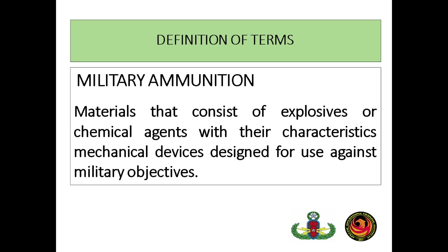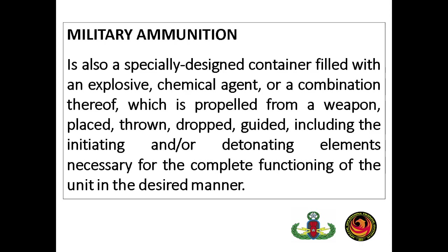Definition of terms — military ammunition: these are materials that consist of explosives or chemical agents with their characteristic mechanical devices designed for use against military objectives — used for military purposes or to attain military objectives directed against military targets or enemies. It is also a specially designed container filled with an explosive, chemical agent, or a combination thereof, which is propelled from a weapon, placed, drone, draft, or guided, including the initiating and/or detonating elements necessary for completion of the desired effect or explosion.